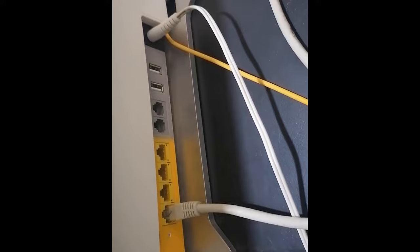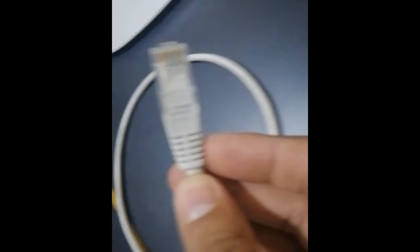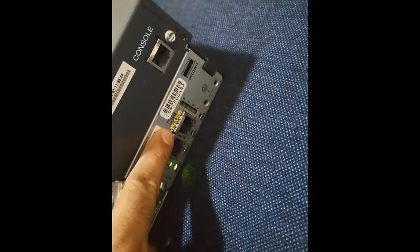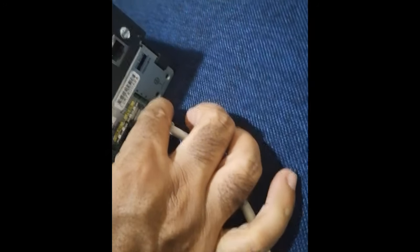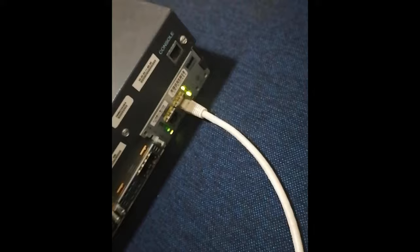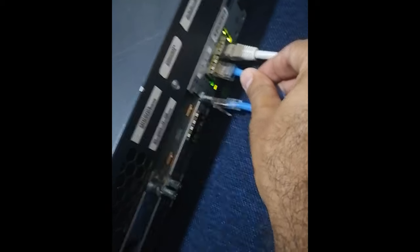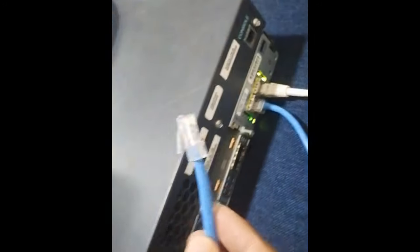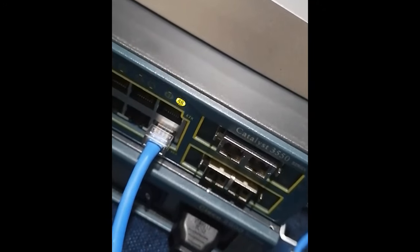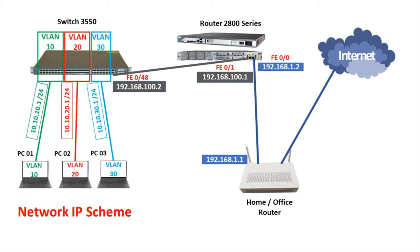This is the back side of my ISP router. I connect one Cat6 cable to the ISP LAN port and the second end of this cable to my router's Fast Ethernet 0/0 port. Then I take another Cat6 cable — one end connects to the Fast Ethernet 0/0 port of the router, and the second end connects to the Cisco 3550's Fast Ethernet 0/48 port. Here you can see the port 48 link light is green, indicating a successful connection.